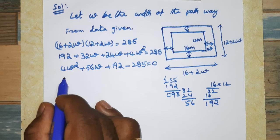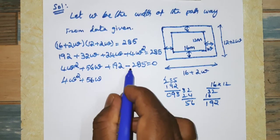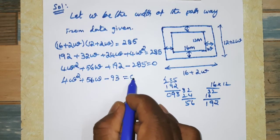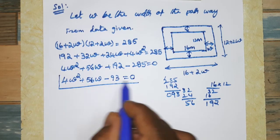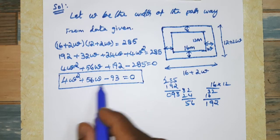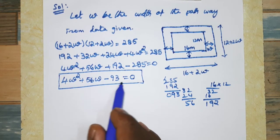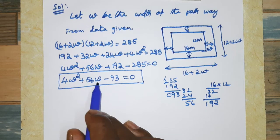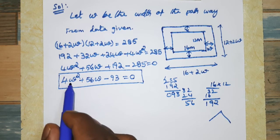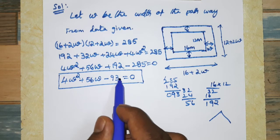For this equation 4W² + 56W - 93 = 0, if we divide by 4 we get a fraction. Since 93 is odd, we cannot easily simplify. So we will factorize using the square term coefficient method.